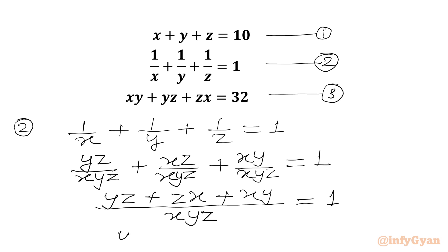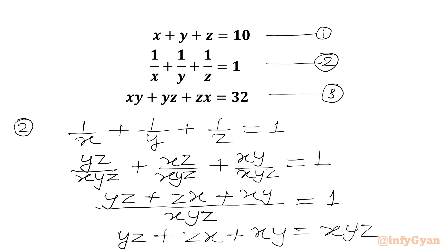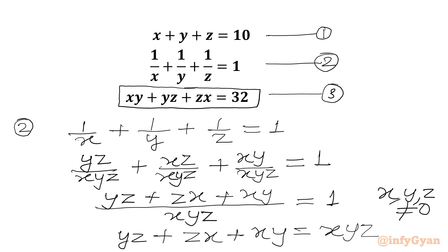The denominator is xyz, equal to 1. So we can write yz plus zx plus xy equal to xyz. Since xyz cannot be 0, xyz equals yz plus zx plus xy, which is our equation number 3. So xyz will be equal to 32.